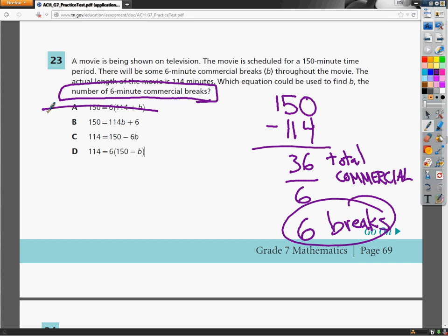The next one says I'm going to multiply 114 by 6 breaks. So that means we're going to watch this movie 6 times. 114 times 6 plus 6, shockingly, does not give you 150. It gives you some gigantic number that you don't want to deal with. So it's not this.